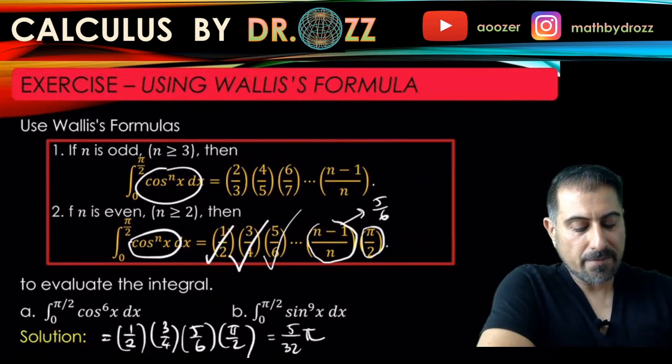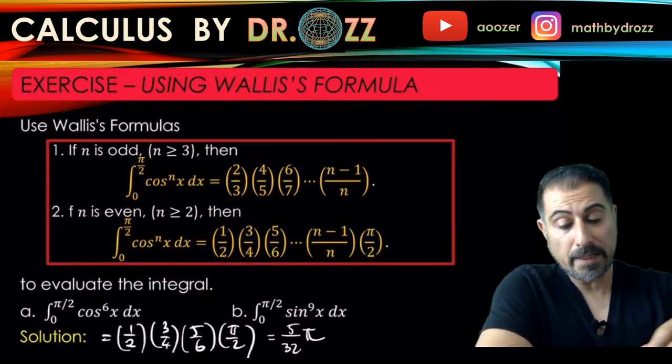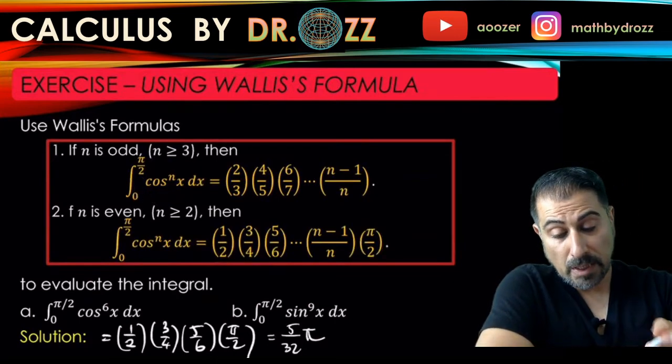In part b, we have the odd power of sine, power is 9. So let's see how the pattern looks like in the first formula. n is odd, n equals 9, all right?